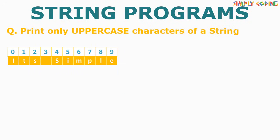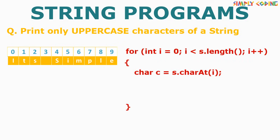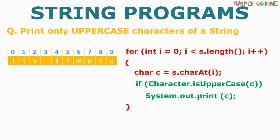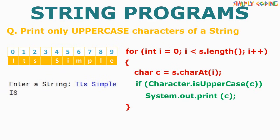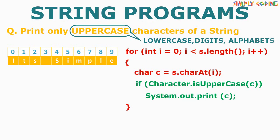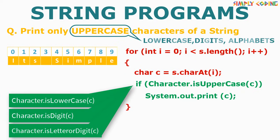If the program is to take a string and print only uppercase characters, we again take our template, which goes through the string giving us characters one by one. This time we put in a check condition using Character.isUpperCase() and print only if this condition is true. The same program can be changed to print only lowercase, digits, or any alphabets by just changing the character class function.